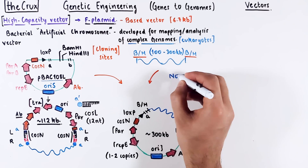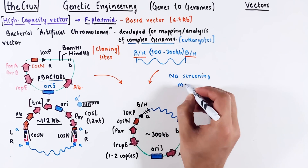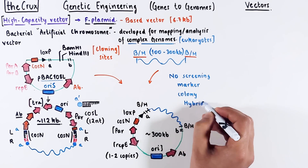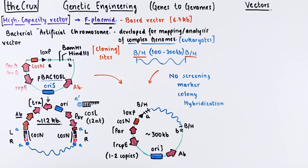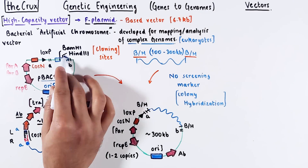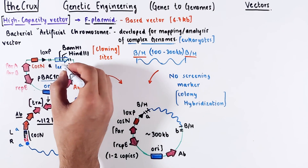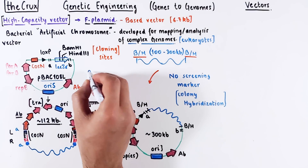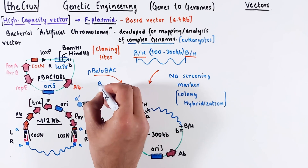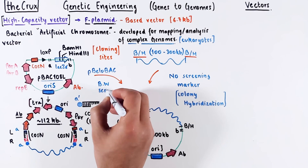The problem with this BAC is the absence of any screening marker. The classic way to find your bacterium of interest is through colony hybridization, which is a painful way to do screening. Thankfully, in the newer iteration of BAC vectors, among many other things, a lacZ was inserted with the cloning site. This is the BeloBac vector series, and this allows for blue-white screening.